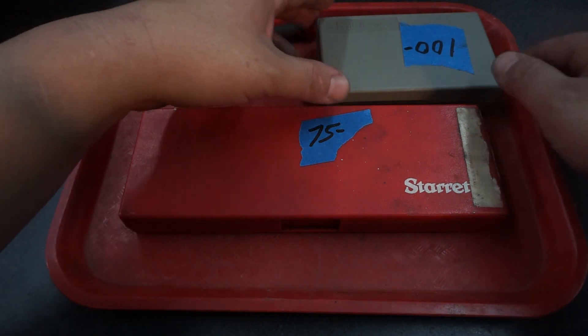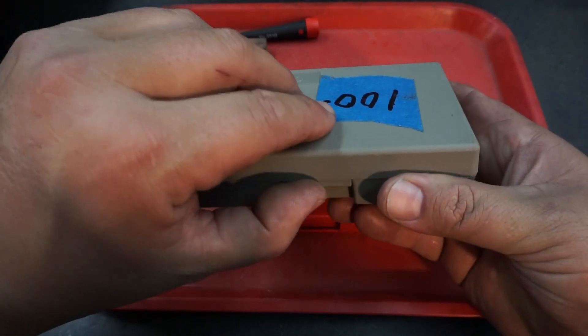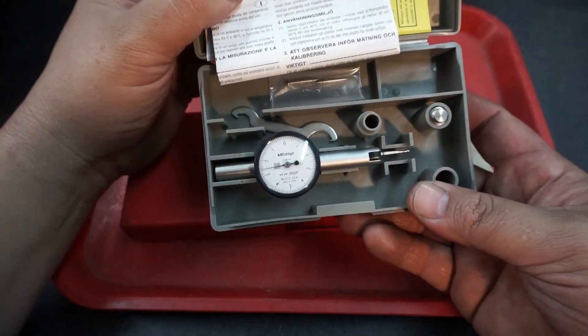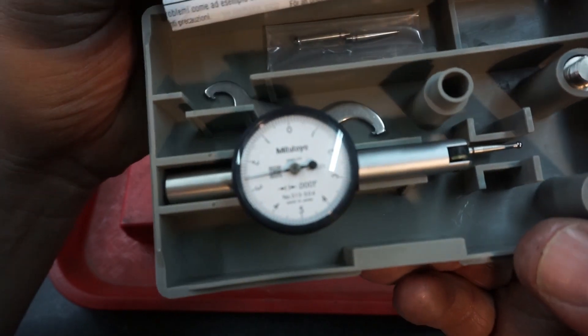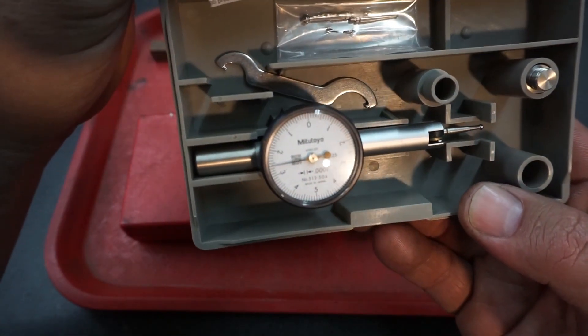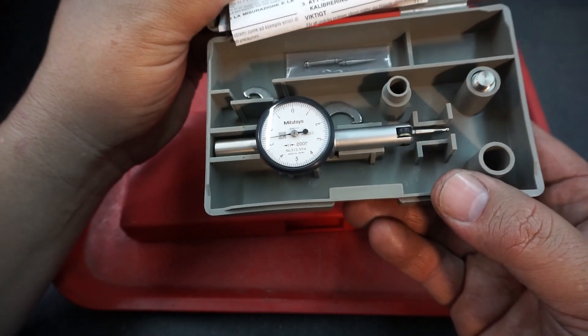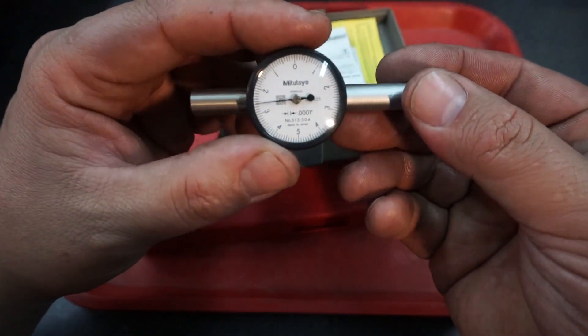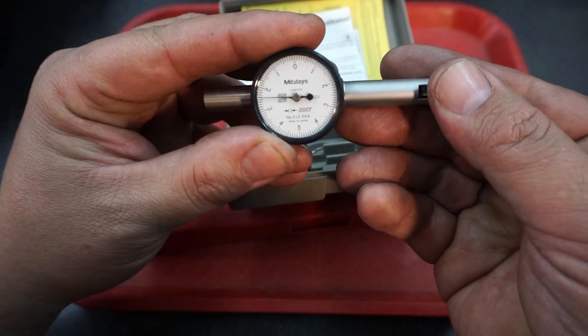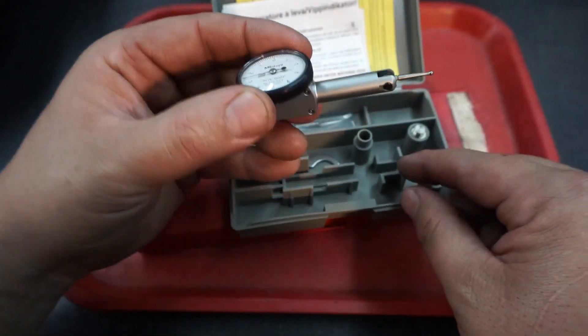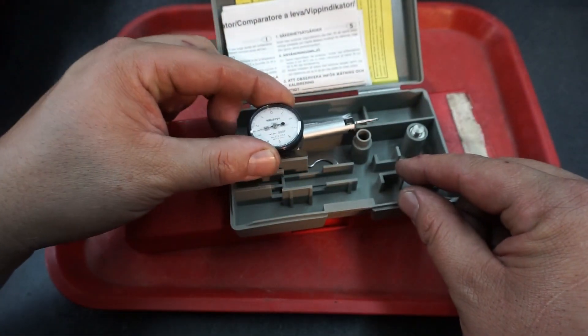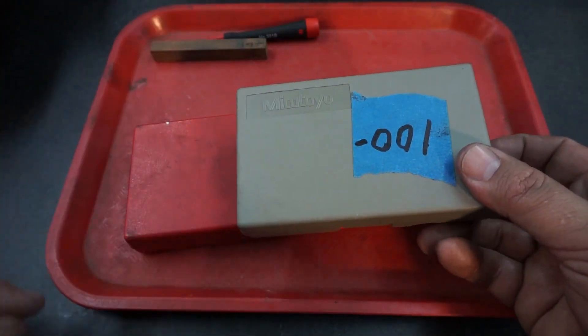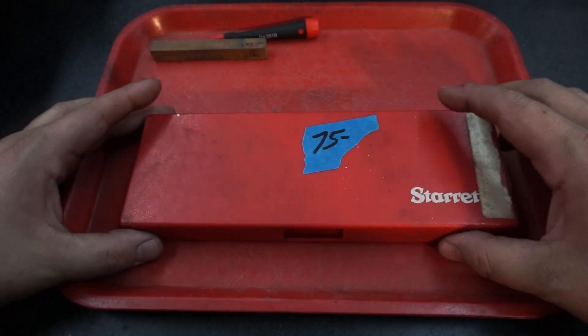I'll show you this since we're talking about it. This Mitutoyo test indicator, it is a tenth and it's like brand new. Very nice indicator right there. So we pretty much got that one for $50.